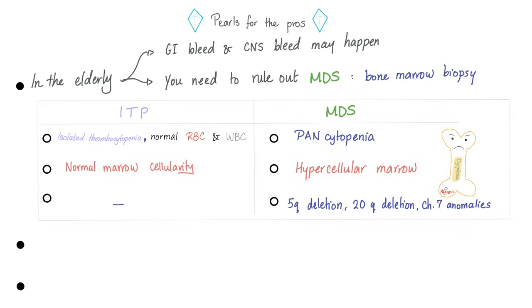What's the difference between ITP and MDS? ITP has isolated thrombocytopenia; MDS has pancytopenia. ITP has normal marrow cellularity, but MDS has hypercellular marrow. ITP has no specific genetic anomaly, but MDS has many. Also, the difference between MDS and aplastic anemia: both have pancytopenia, but MDS has hypercellular marrow, while aplastic anemia has hypocellular marrow.